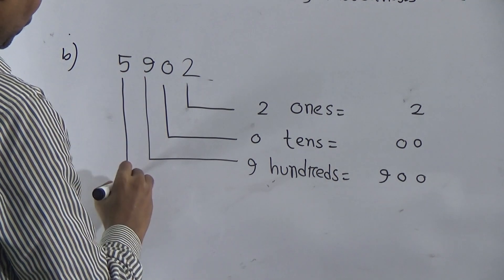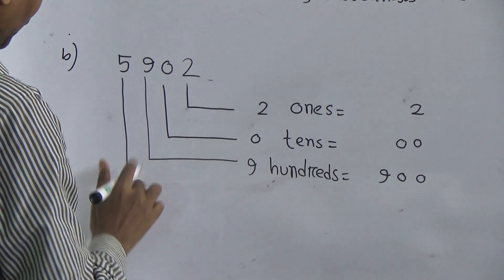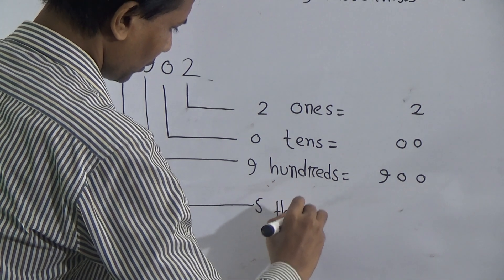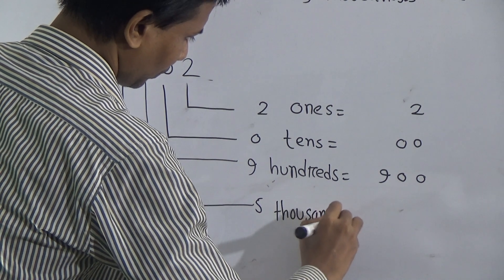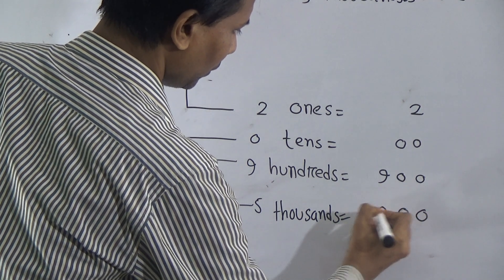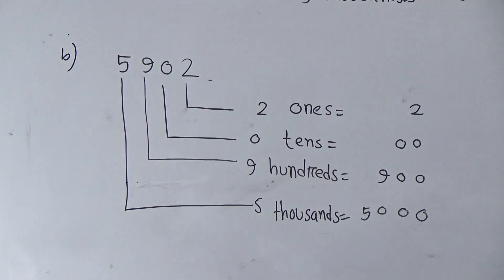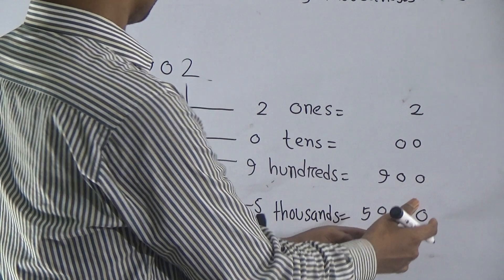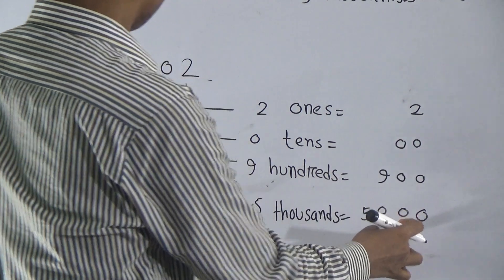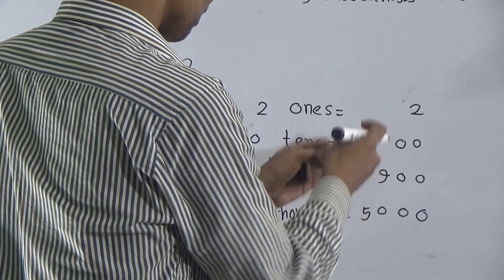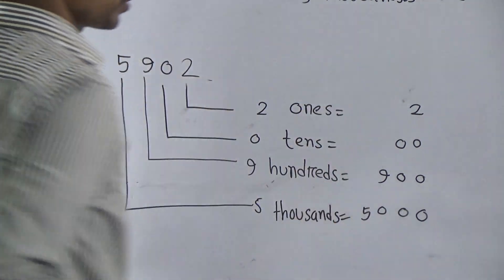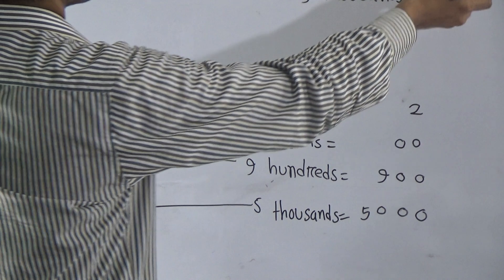The place value of 5 is 5000. That means zero, zero, zero, and five. You have to maintain the sequence. Look — first I have written two ones, then zero tens, that means zero, then nine hundreds, that means 900. I maintain a sequence. Then 5000s. This is the place value of thousands.